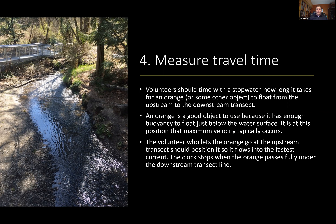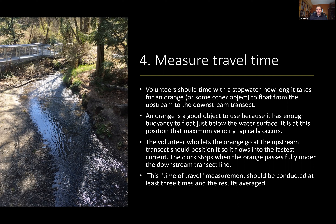Put the float into the fastest portion of the current, which is typically in the middle. Start your timer when you release it at the upstream transect, and stop when it passes fully underneath the downstream transect. Do this measurement at least three times and average your results to get a typical travel time — you can do more than three, but three is the minimum.